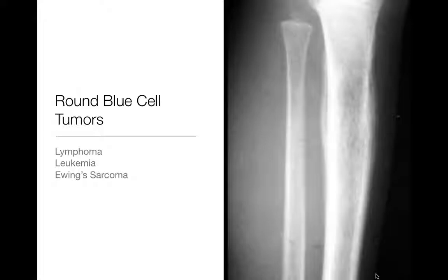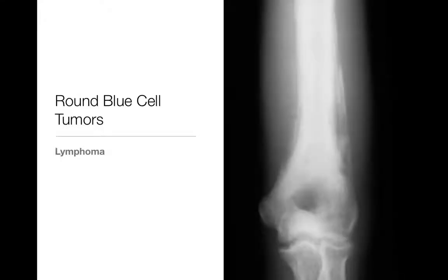Round blue cell tumors will be associated with an aggressive periosteal reaction. This is an example of lymphoma. It's very hard to see the actual lymphoma in the bone itself, but you do see this laminated periosteal reaction associated with it. When you MRI these lesions, they'll often be very well demarcated and geographic — that's one of the hallmarks of lymphoma on MRI in the bone. They can be hard to see on the radiograph, and your clue may be the periosteal reaction.